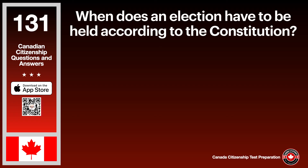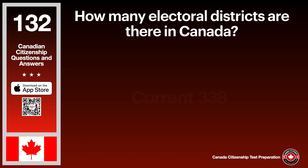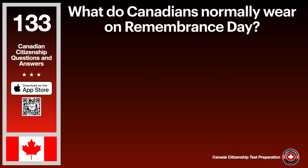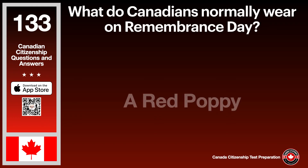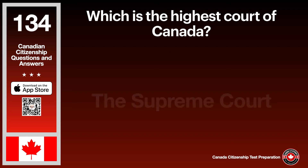What is the significance of the discovery of insulin by Frederick Banting and Charles Best? The answer is the discovery has saved 16 million people worldwide. When does an election have to be held according to the Constitution? The answer is every four years following the most recent general election. How many electoral districts are there in Canada? The answer is 338. What do Canadians normally wear on Remembrance Day? The answer is a red poppy. Which is the highest court of Canada? The answer is the Supreme Court.